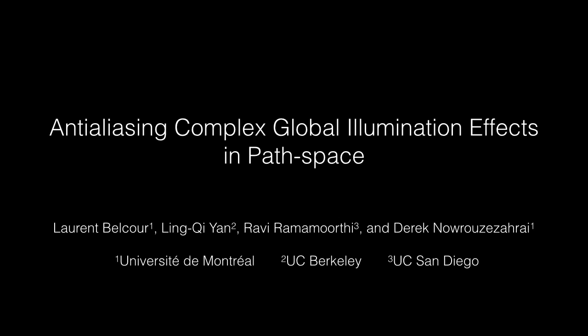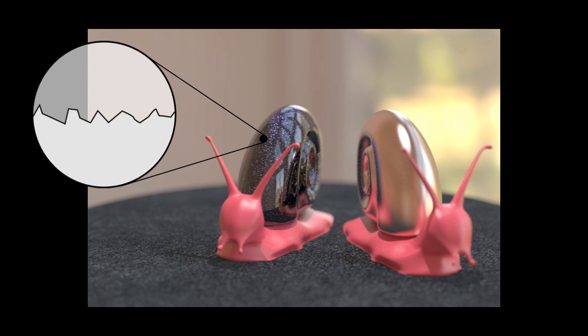We present a novel method to enable the use of anti-aliased reflectance models in global illumination renderers. To efficiently render the directly visible appearance of complex materials, such as the glitter on the left snail shell, previous work has shown how to anti-alias reflectance models based on the projected pixel footprint at the surface of objects.